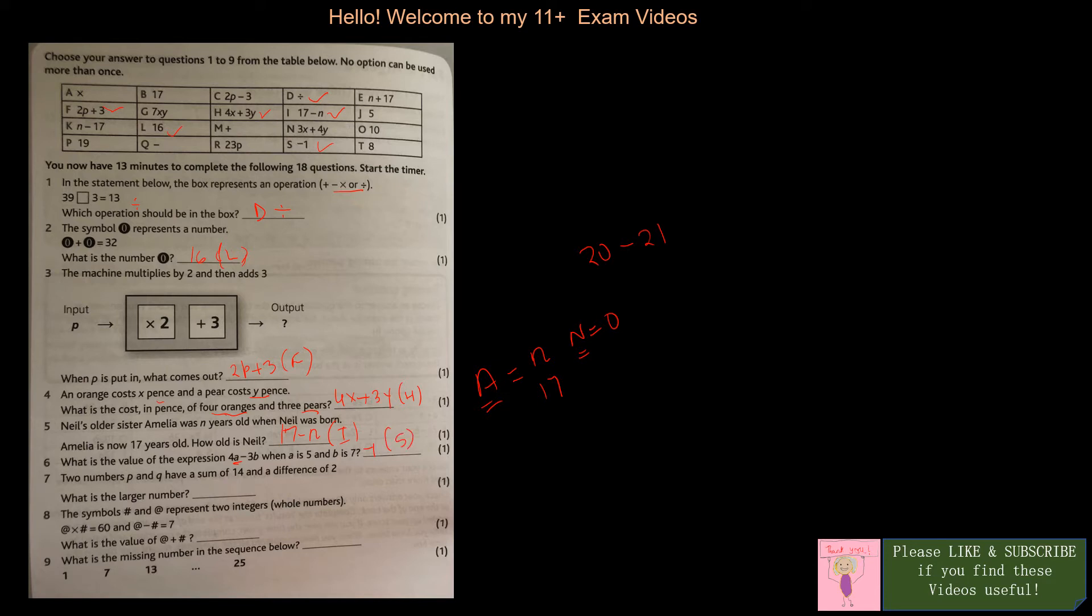Two numbers p and q have a sum of 14 and a difference of 2. What is the larger number? p plus q equals 14 and p minus q equals 2. If you add them together like a simultaneous equation, you get 2p equals 16, so p equals 8. If p equals 8, then q equals 6, because 8 minus 6 is 2. The larger number is 8, and 8 is T.